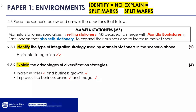The advantages of diversification: increase sales — and a supporting statement for business growth purposes. Improves the business's brand and image. You cannot give vague sentences — if you give vague sentences we cannot award the second split mark. Write and construct proper sentences. To explain, we split the marks; for identify, no explanations needed because we give you a double mark and just want the concept.